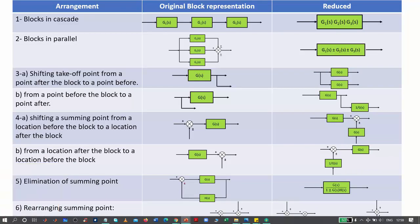A correction on Rule 5: if you take a minus sign at the comparator input, you get a plus sign in the denominator expression G/(1 + GH); if you take a plus sign, you get a minus sign, giving G/(1 − GH). These are all six rules applied while performing block diagram reduction. If you have any question or query about understanding each of these rules, please ask.